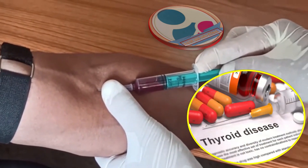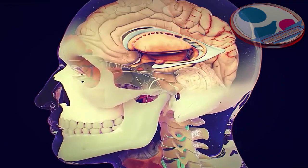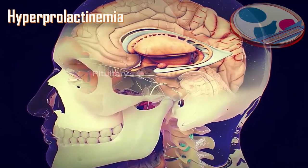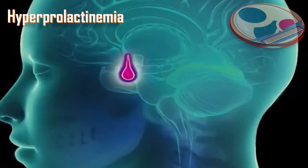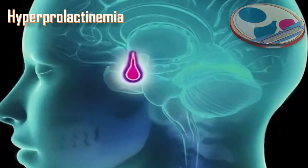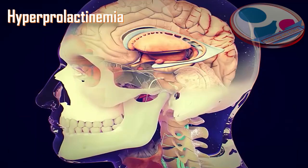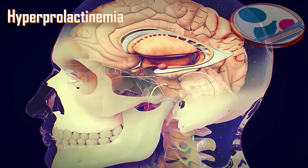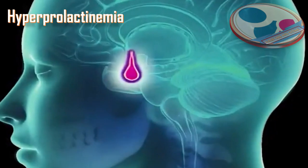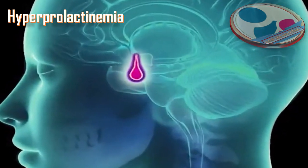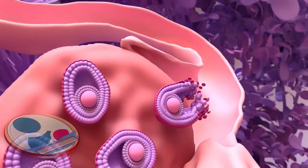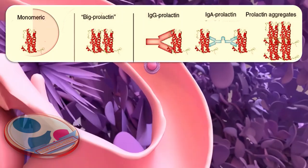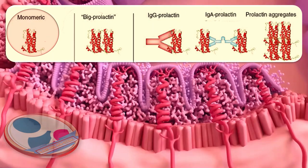Some people may have a high level of the pituitary hormone called prolactin, known as hyperprolactinemia. When prolactin levels are very high, ovulation may not occur at all. In less severe cases, it may cause late ovulation. There are several forms of prolactin in the body, but only one form interferes with ovulation.